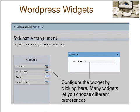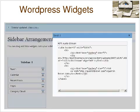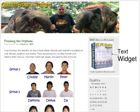You can add the title of the widget and quite often you can add some different preferences. Text widgets are great as they allow you to add all sorts of information, and you can use HTML forms, advertising and much more. We simply drag our text widget into our widget bar, then put in a heading and add some HTML. And here's that text widget with HTML loaded in our page.